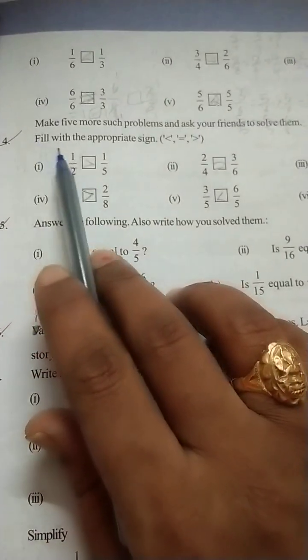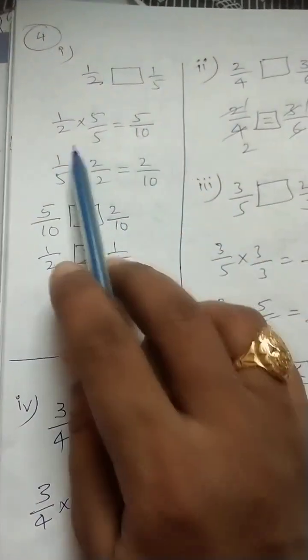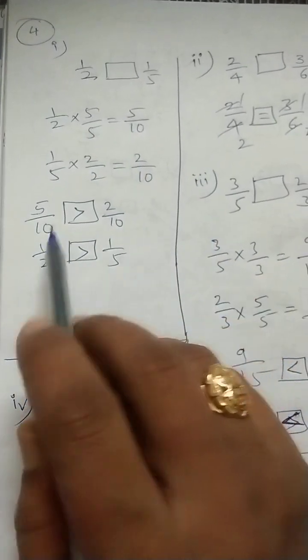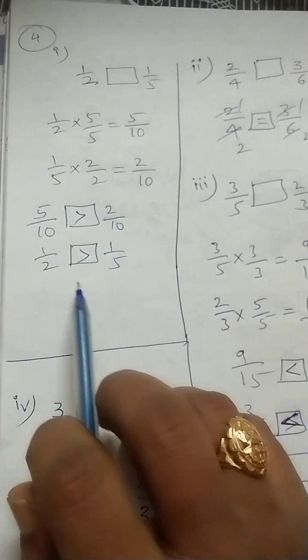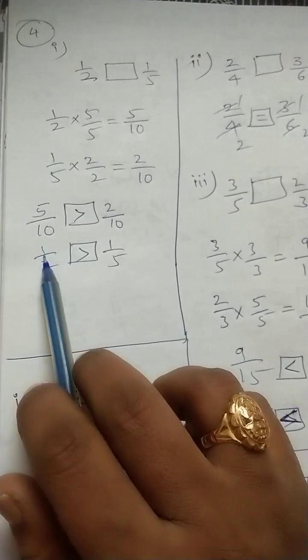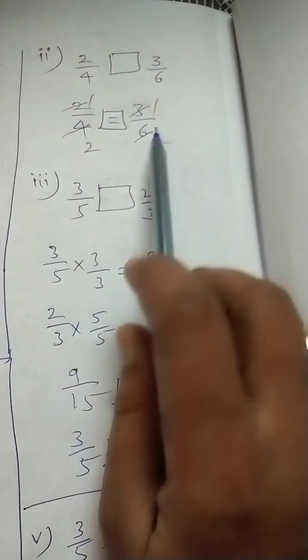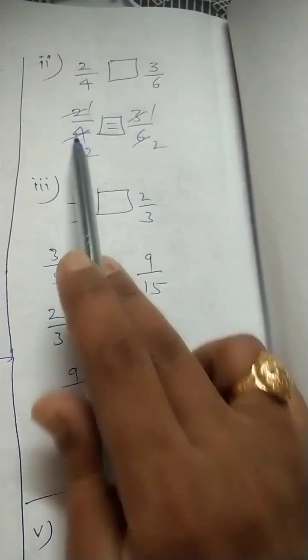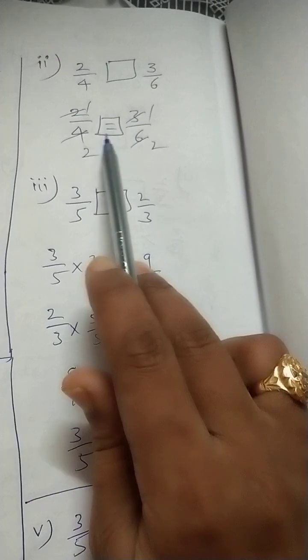Next, fourth question: fill the appropriate sign. Same process as before. First bit: 1 by 2 and 1 by 5. Convert to like fractions — 5 by 10 is greater than 2 by 10, so corresponding fractions: 1 by 2 is greater than 1 by 5. Next, second bit: 2 by 4 and 3 by 6. Do cancellation: 2 by 4 simplifies to 1 by 2, and 3 by 6 simplifies to 1 by 2. They are equal, so equal symbol.